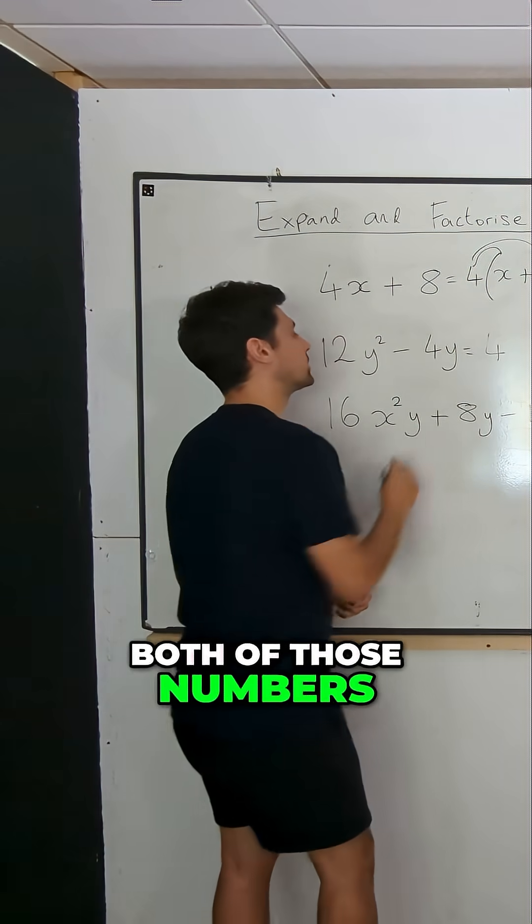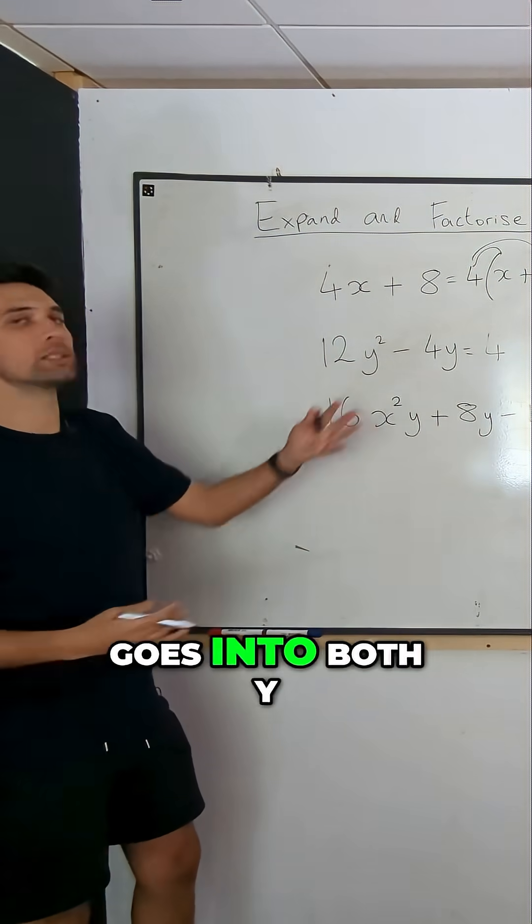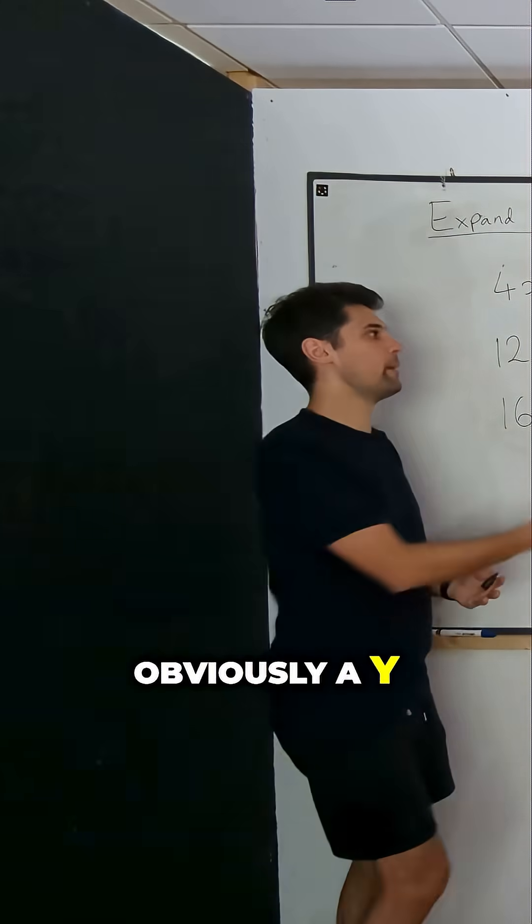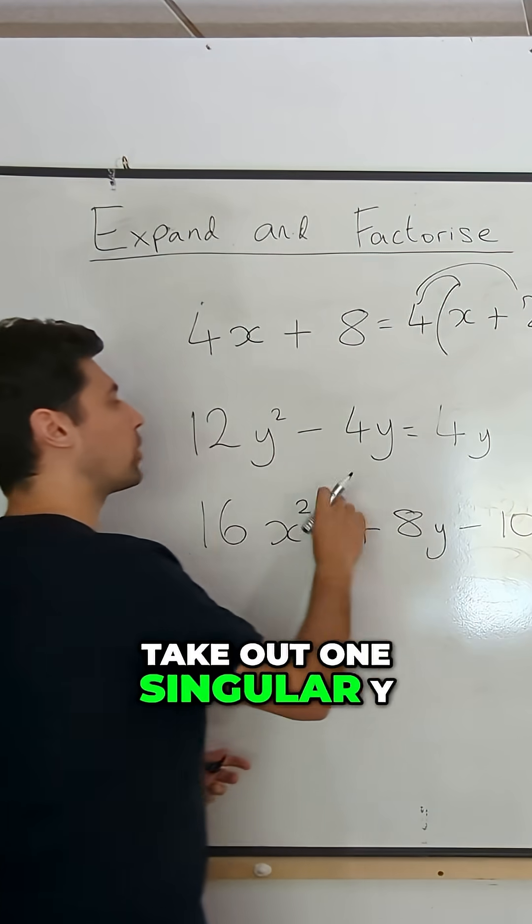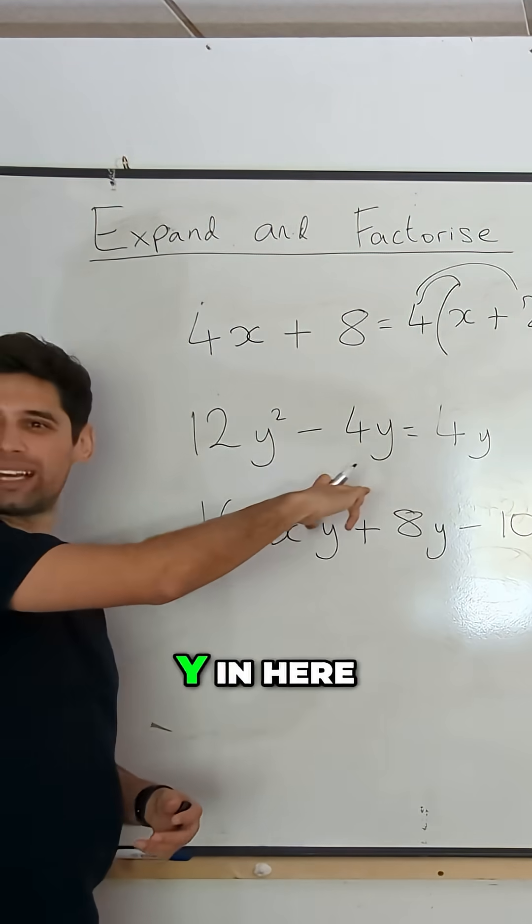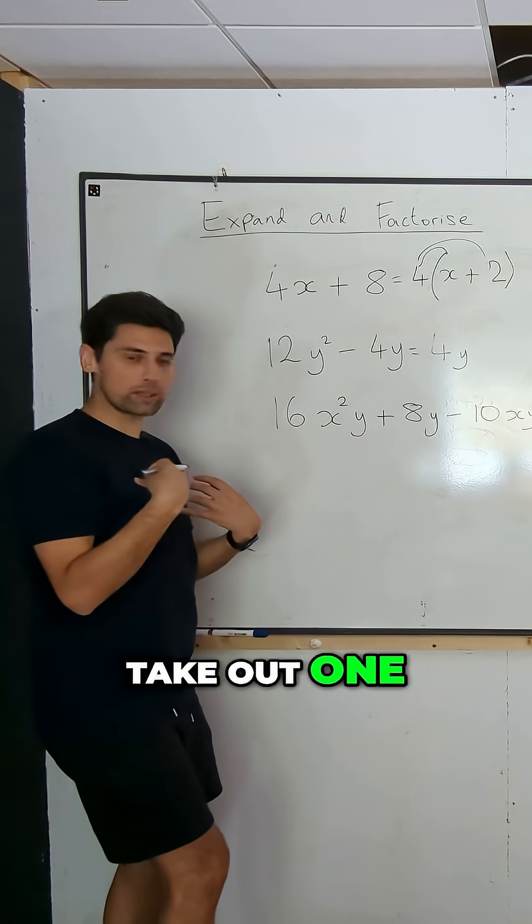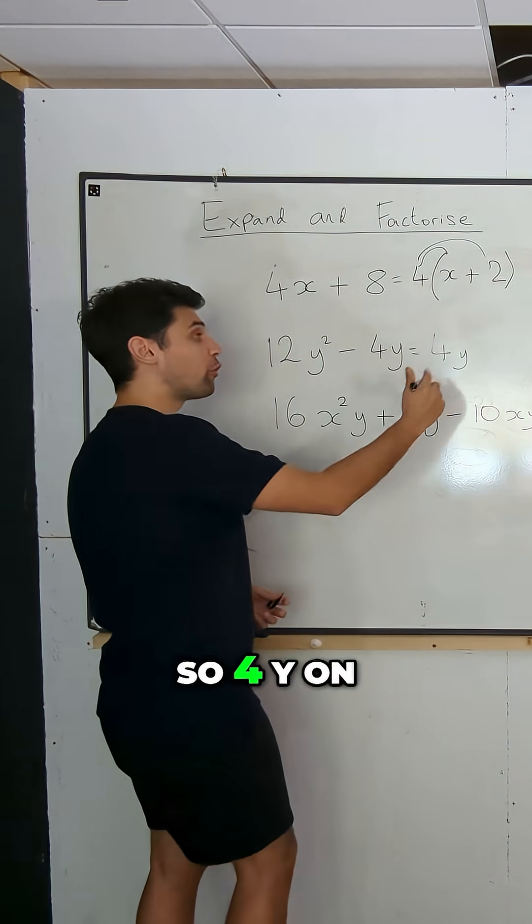So four goes into both of those numbers. And then what letter goes into both? Y. Obviously a y. And we can only take out one singular one because there's two y's in this one, yeah, there's only one y in here. So we can only take out one because we can't take out more than one from this. So 4y on the outside.